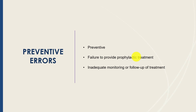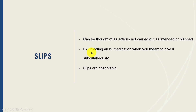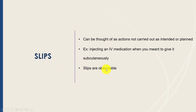Another way of categorizing errors, used extensively in patient safety, is slips, lapses, and mistakes. A slip is an action that's not carried out as intended or planned. For example, you meant to give a medication subcutaneously but got distracted and accidentally gave it intravenously. Slips are observable — you can see that the action was not carried out as planned.